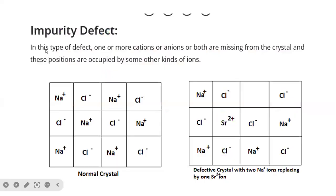Impurity defect: in this type of defect, one or more cations or anions or both are missing from the crystal and those positions are occupied by some other kinds of ions. This is a normal crystal.